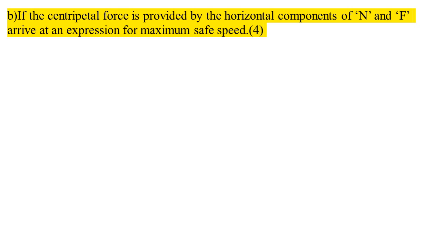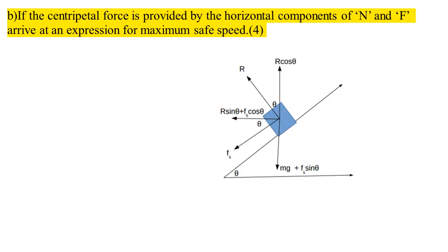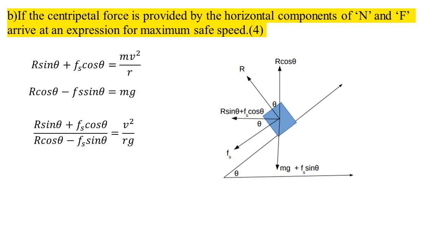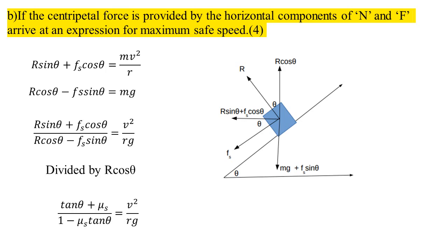If the centripetal force is provided by the horizontal components N and F, derive an expression for maximum safe speed. The maximum safe speed derivation: R sin θ + Fs cos θ = mv²/R, and R cos θ − Fs sin θ = mg. Dividing these equations gives: v² = Rg(tan θ + μs) / (1 − μs tan θ), so v = √[Rg(tan θ + μs)/(1 − μs tan θ)]. This is the derivation.